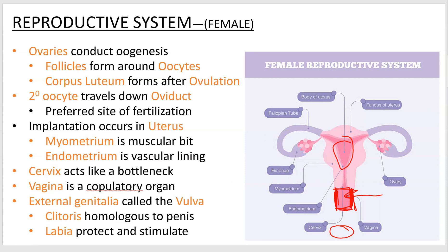The external genitalia of a female, which is often called the vagina, is a misnomer — it should be called the vulva. It consists of some labia, which are sensory and protective, and a clitoris, which is homologous to the penis — it comes from the same embryonic parts — and is erectile and also has lots of nerve endings.